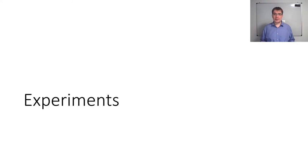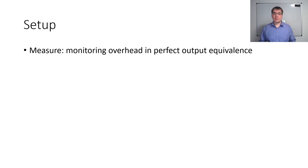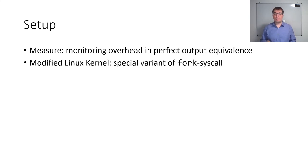In order to establish some baseline expectations of how efficient differential monitoring can be, we ran some experiments. In particular, on what we view as the most common case, where two programs produce equal outputs. So here's our experimental setup. We're trying to measure the monitoring overhead for programs who produce perfectly equal output. We modified a Linux kernel to offer a special variant of the fork system call that signals that the resulting processes should be differentially monitored.